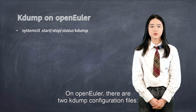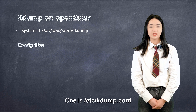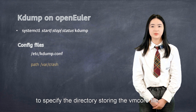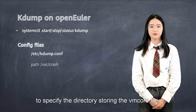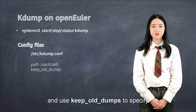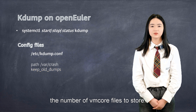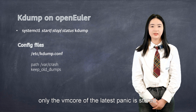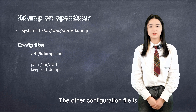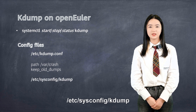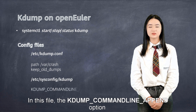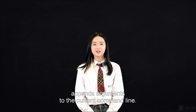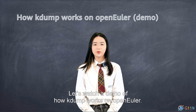On OpenEuler, there are two KDump configuration files. One is /etc/kdump.conf, where we can use the path variable 'crash' to specify the directory storing the vmcore file, and use 'keep_old_dumps' to specify the number of vmcore files to store — keep_old_dumps 1 indicates only the vmcore of the latest panic is stored. The other configuration file is /etc/sysconfig/kdump. In this file, the KDump command line append option appends an argument to the current command line.